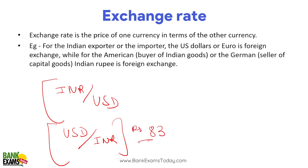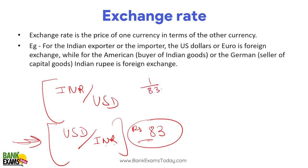So 1 dollar pe aapko 83 rupees milenge. Yeh international level pe jo currency markets hain, foreign exchange markets hain, unme yahi terminology use hoti hai — 83 rupees per US dollar. If you want to calculate how many US dollars you are going to get per Indian rupee, just reverse it: 1 divided by 83, which gives you 0.012 US dollars per Indian rupee. That's just a little more than 1 cent. These are exchange rates.